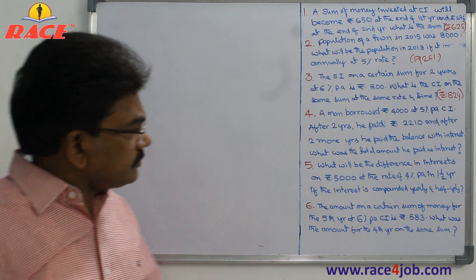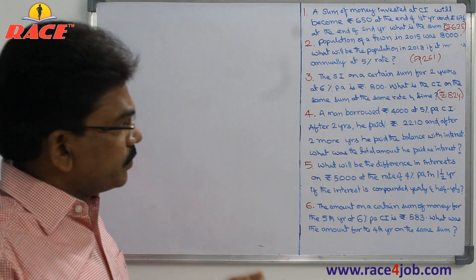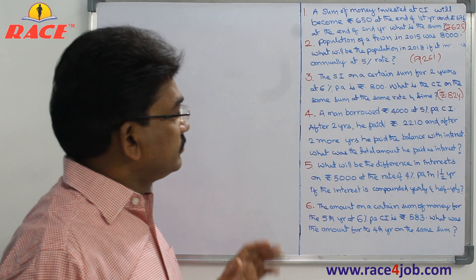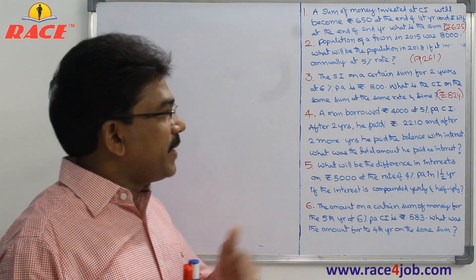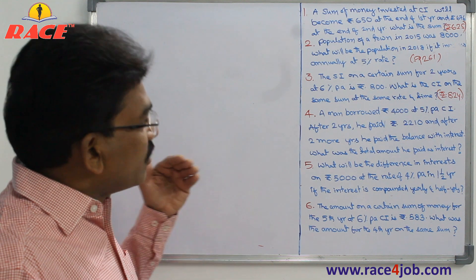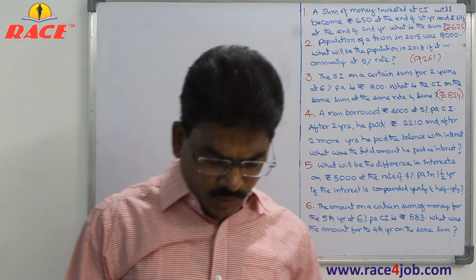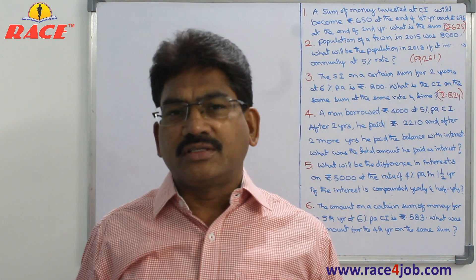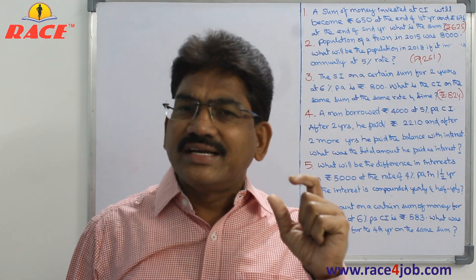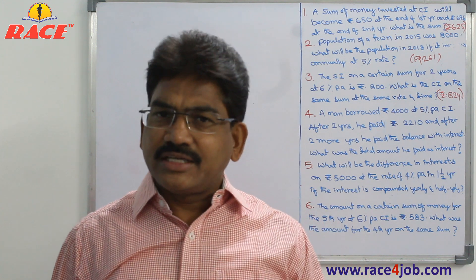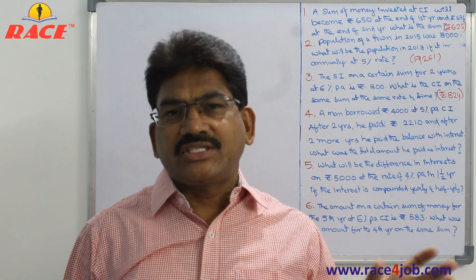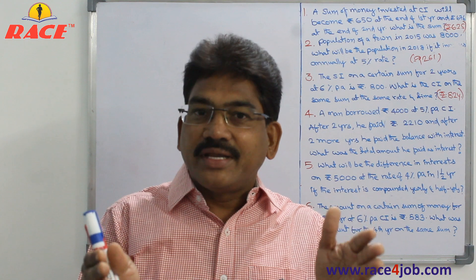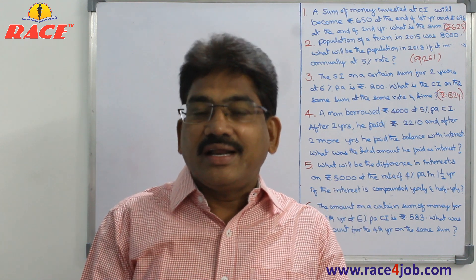See the next interesting question. A man borrowed 4,000 rupees at 5% per annum compound interest. After 2 years he paid 2,210 rupees, and after 2 more years he paid the balance with interest. What was the total amount he paid as interest? He borrowed 4,000, cleared some money after 2 years, then after a total of 4 years cleared the remaining. We must calculate interest in two separate parts because some money was already cleared after 2 years.